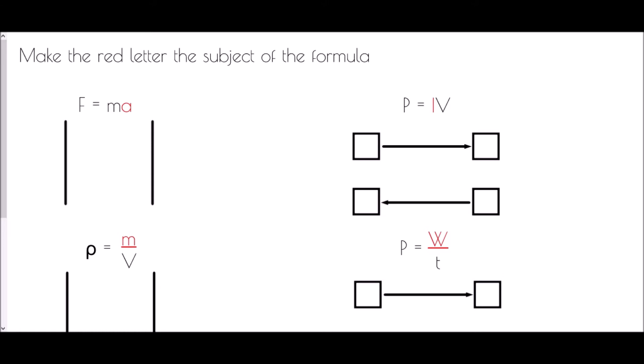We need to think about a and ask: what has happened to a? Because it is 'ma' — two letters next to each other means they have been multiplied. So we need to reverse that operation: instead of multiplying by m, we divide by m, and we do that on both sides. Therefore F divided by m gives us F over m, and the 'ma' divided by m leaves just a. So a is now the subject of the formula.